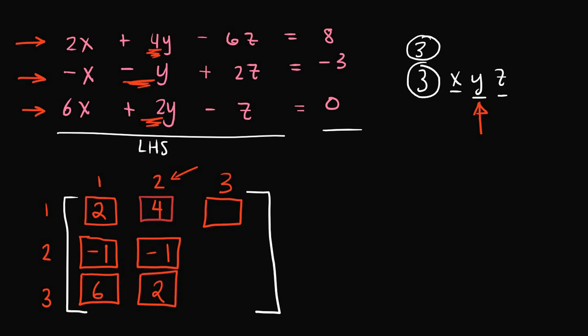For the (1,3) element, 1 refers to equation 1 and 3 refers to the unknown variable z. The coefficient for the z term in the first equation is negative 6. For the (2,3) term, 2 corresponds to the second equation and 3 corresponds to z, so the coefficient in the second equation for the z term is positive 2. Finally, the (3,3) element corresponds to the z coefficient in the third equation, which is negative 1.